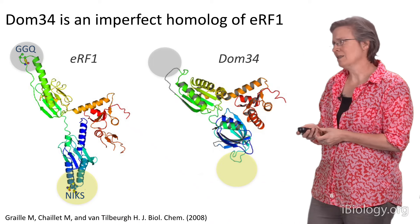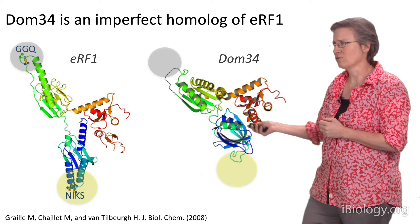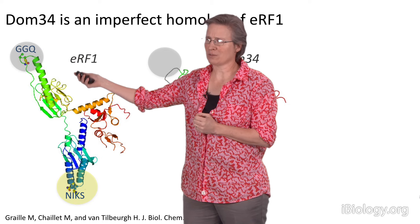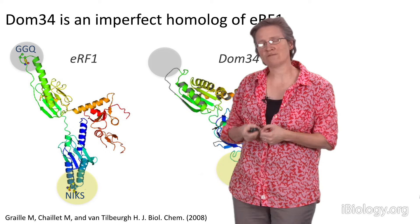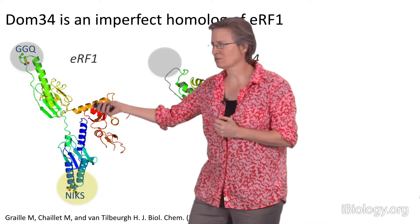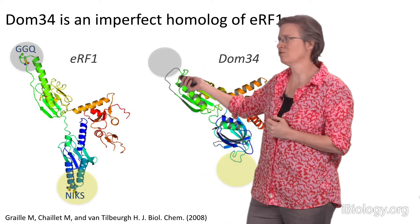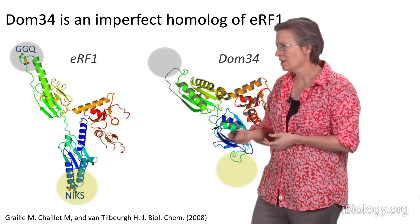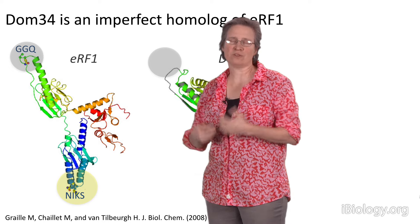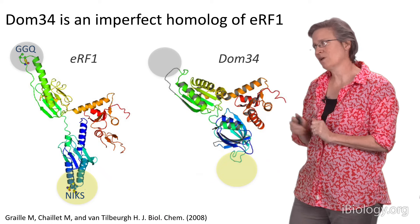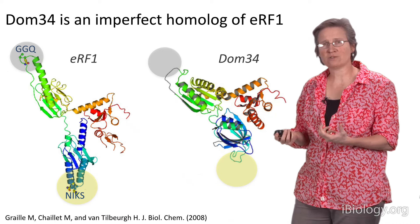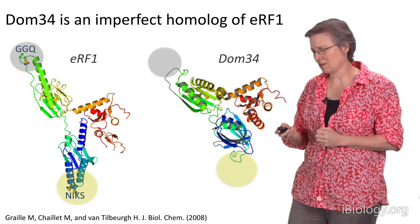We knew that DOM34 was a homologue of eRF1. eRF1 has a codon recognition Nix domain and a GGQ motif at the top that interacts with the large ribosomal subunit and is responsible for catalysis of peptide release. DOM34 has similar domains — the beta sheet and alpha helix architecture is clearly related — however it's missing the GGQ motif responsible for releasing the polypeptide chain, and there's no codon recognition motif. The domain that interacts with GTPases essential to the termination step is conserved in both. We had a protein related to a termination factor and suspected it must engage the ribosome.